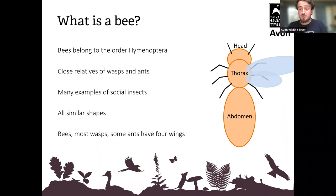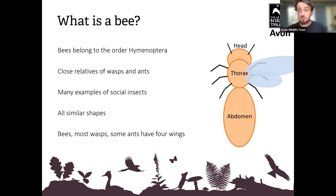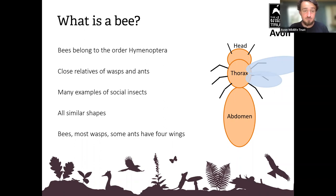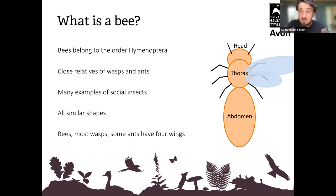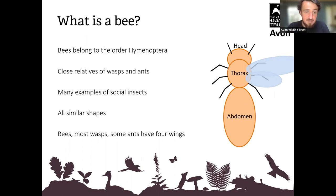The Hymenoptera have loads of examples of social species within the order — they're not all social, but they are generally very social insects. Ants mostly live in large groups, bumblebees and honeybees famously live in large groups, and many wasps and hornets do as well. They're some wonderful examples of social insects. I've mentioned they're all similar shapes, and the bees have four wings.